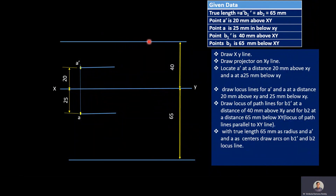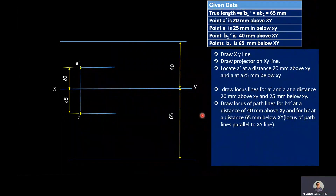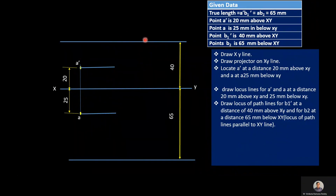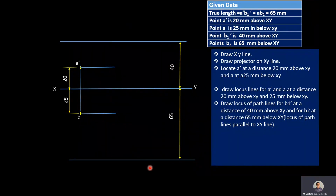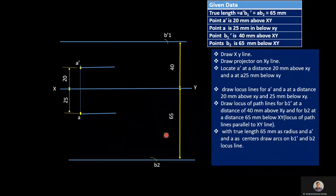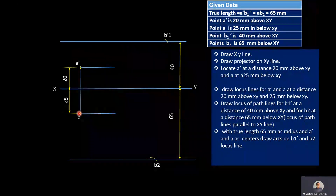The B1' locus line is at 40 mm above XY line and the B2 locus line is at 65 mm below XY line. Next step is drawing true lengths in both front view and top view. With A' as center and 65 mm as radius, draw an arc on the B1' locus line to get point B1'. Similarly, with A as center and 65 mm as radius, draw an arc on the B2 locus line to get point B2. Then join A'B1' and AB2.